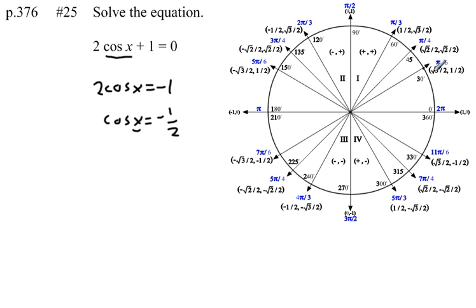What we want to do is look on the unit circle and find which angle or angles have a cosine of negative 1 half. Well, to find that, what we need to look for is the angle or angles that have an x-coordinate equal to negative 1 half. Why the x-coordinate?